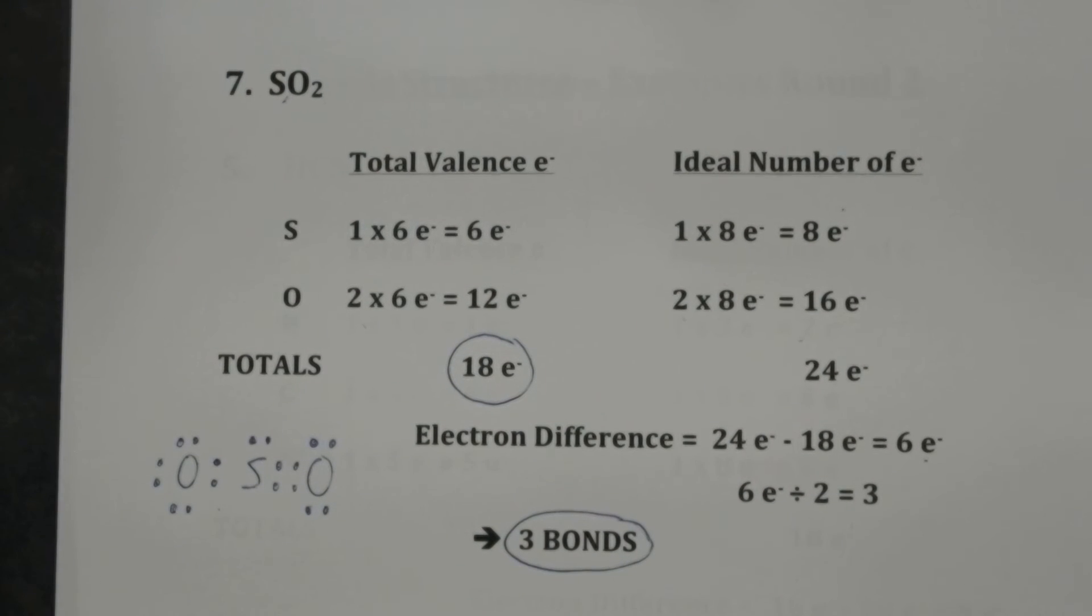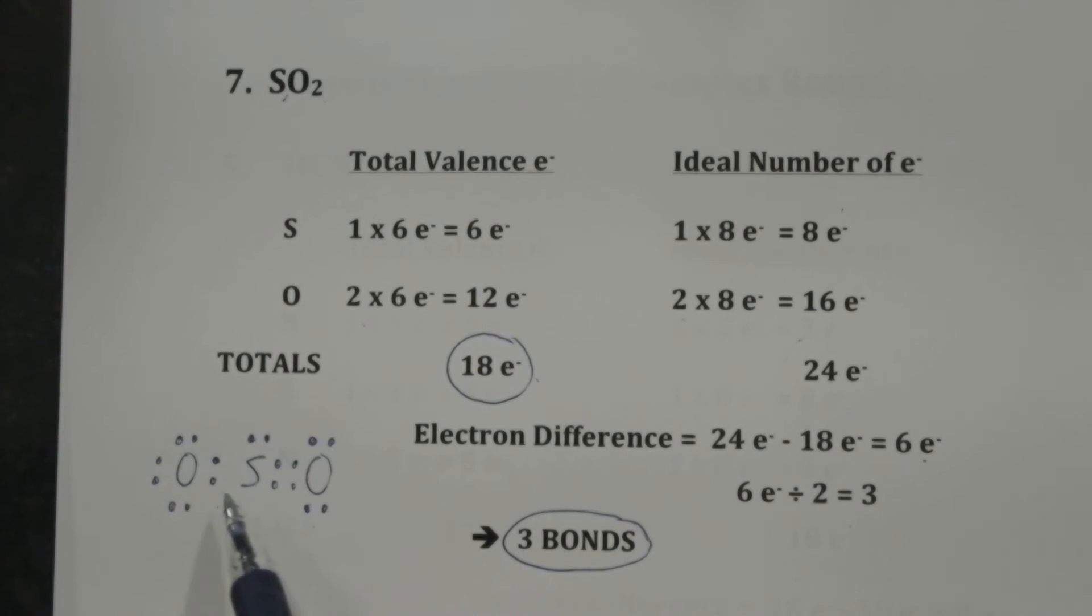That's the correct Lewis structure, but we want to double check. Two, four, six, eight, ten, twelve, fourteen, sixteen, eighteen. Eighteen dots, eighteen electrons. That matches up. One, two, three bonds. That matches up.